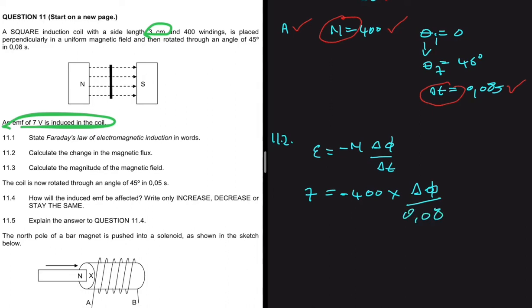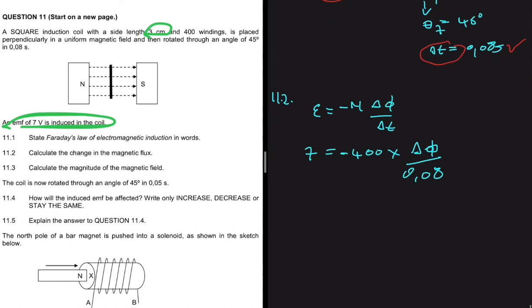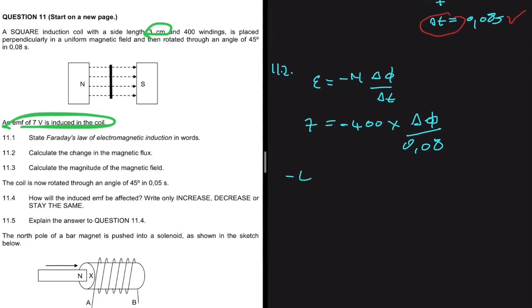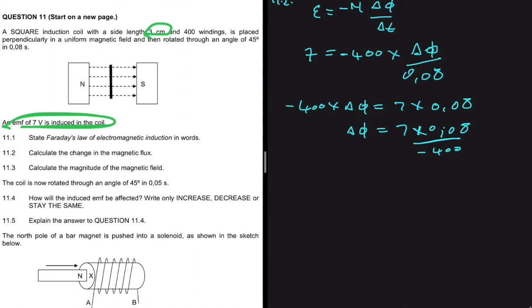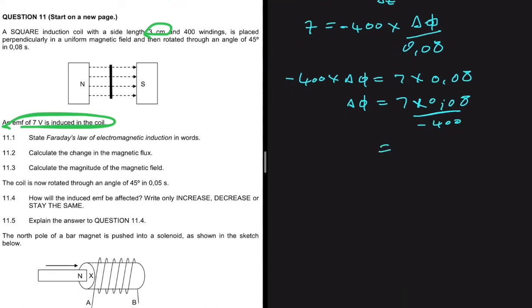Cross-multiplying gives us: minus 400 multiplied by the change in magnetic flux equals 7 multiplied by 0.08. Therefore, the change in magnetic flux equals 7 times 0.08 divided by minus 400. Putting that into the calculator gives minus 1.4 times 10 to the minus 3 Wb (webers). That completes question 11.2.